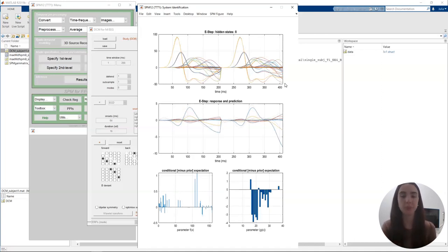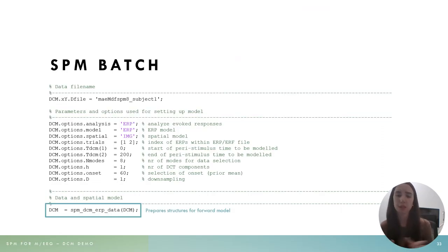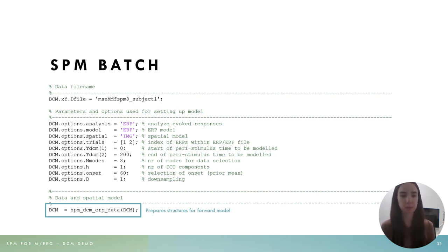At the bottom we have our parameters — neuronal model parameters and spatial model parameters. This can take a while to run, from a few minutes to a few hours depending on your model. In the meantime, I'm going to show you a different way to run a DCM model. The GUI is very useful when you're starting to learn DCM and exploring all the options. But in some cases it may be more useful to use an SPM batch or script to run your models — this is exactly the same process but written in code instead of clicking through the GUI.